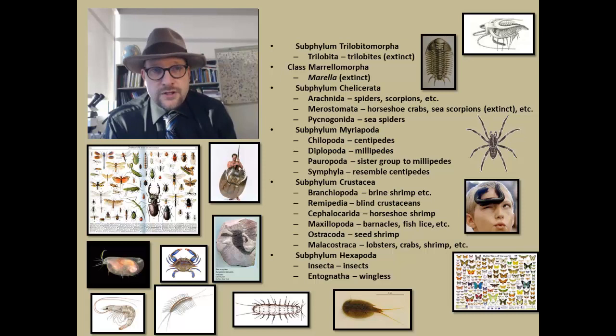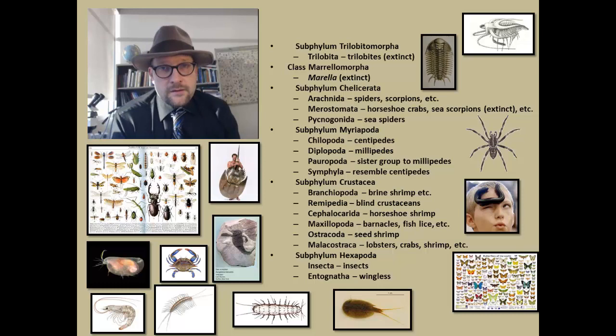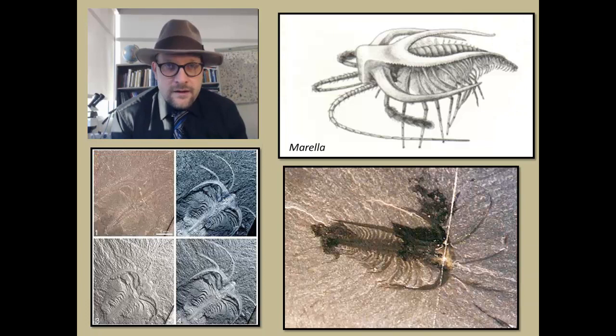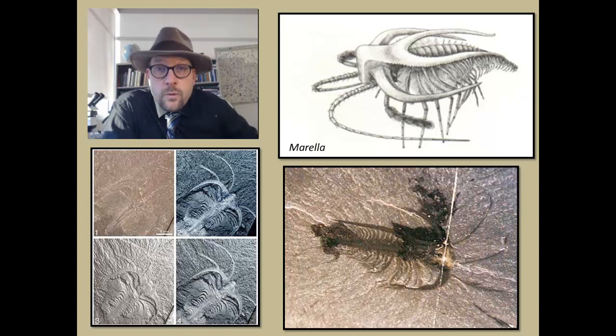Now there is one fossil that seems to offer some characters that are shared with the Merostomata, the Myriapoda, and the trilobites, and that fossil is from the early Cambrian, and it is called Marrella, and it is actually placed within its own class. Marrella was discovered by Charles Walcott at the Burgess Shale Fossil Site in British Columbia, Canada.